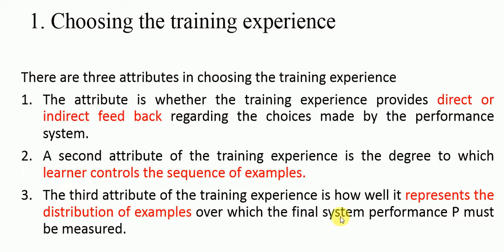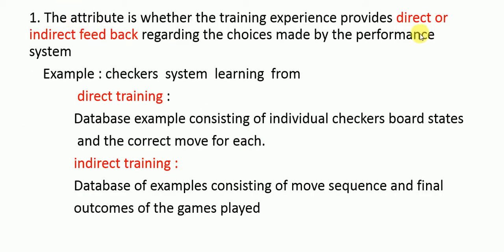The second attribute is the degree to which the learner controls the sequence of examples. The third attribute is how well the training experience represents the distribution of examples over which the final system performance P must be measured. We will be covering all three attributes in this session, starting with the first: direct and indirect feedback.